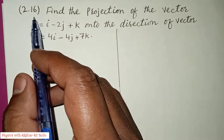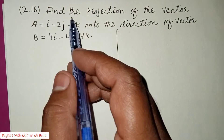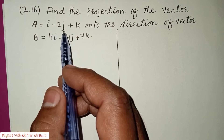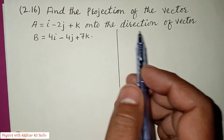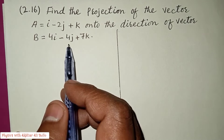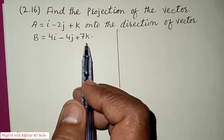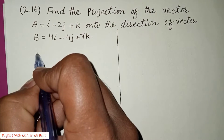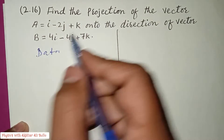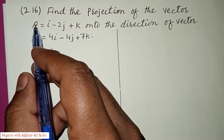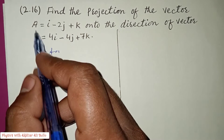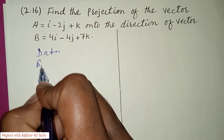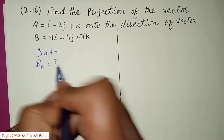Problem number 2.16: find the projection of vector a onto the direction of vector b. We have to find the projection of vector a on b, so the projection of vector a on b is equal to what.